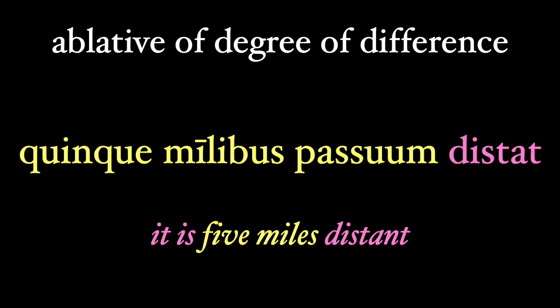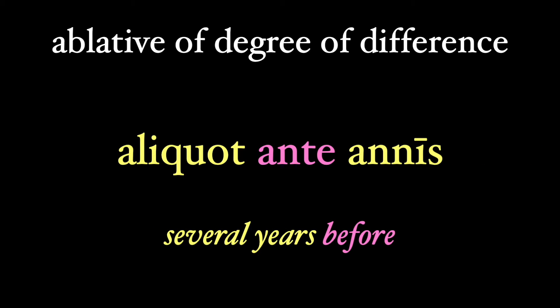But sometimes we see this ablative used with distance or time. Quinque milibus passum distat — it is five miles distant. The word of comparison is our verb distat, and literally our ablative is something like 'by five miles.' There's also aliquot ante annis — several years before, even if it's literally 'before by several years.'